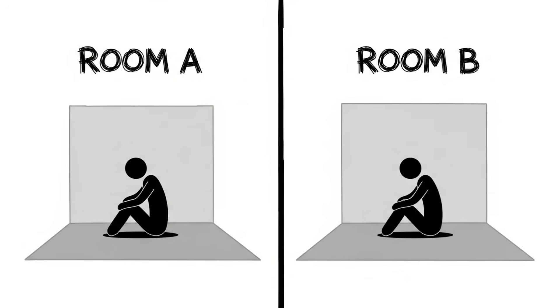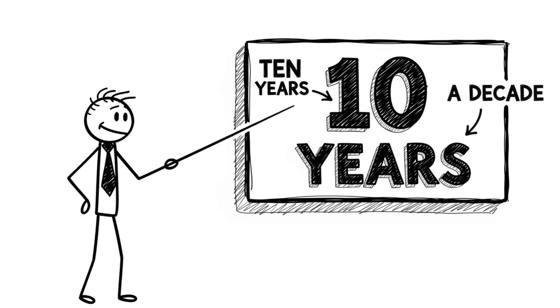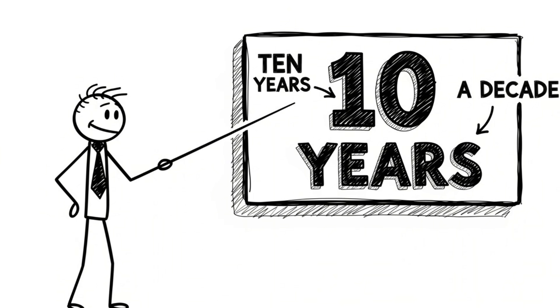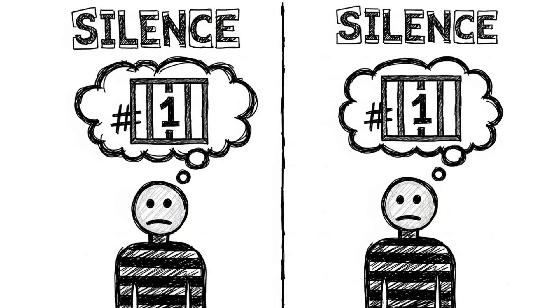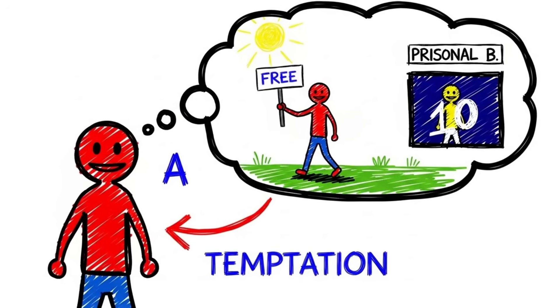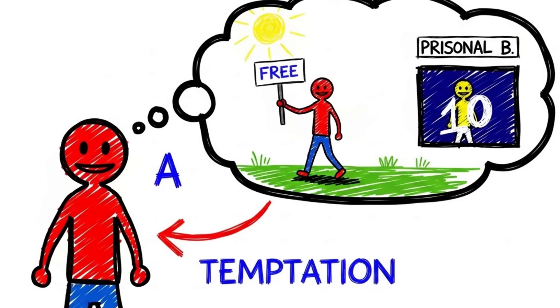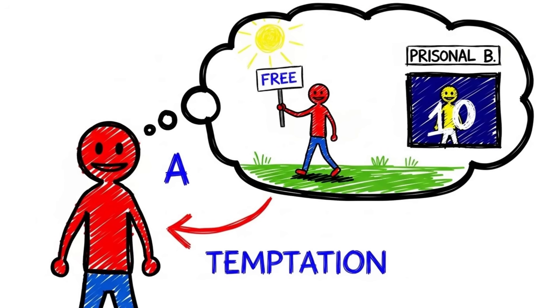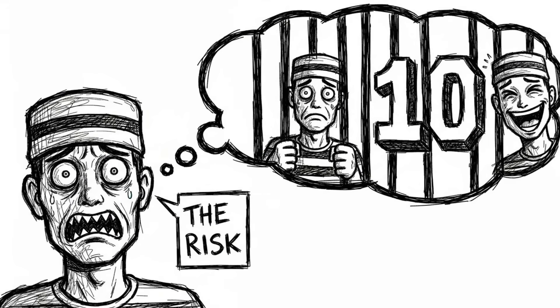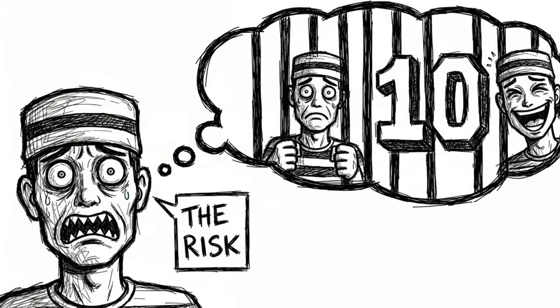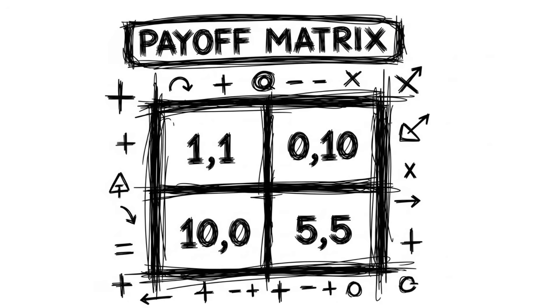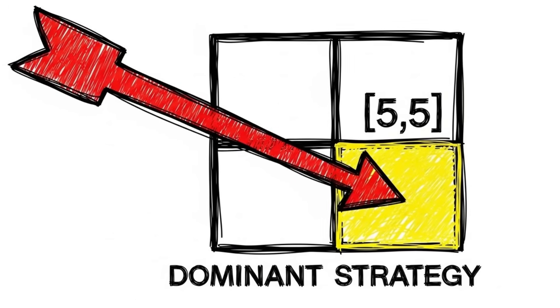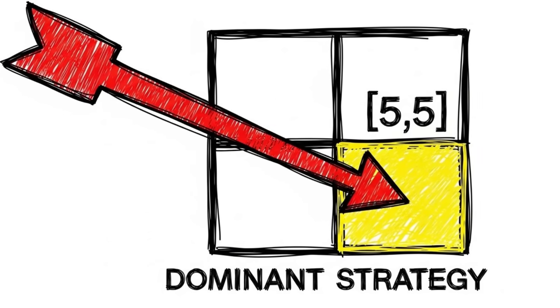They offer each prisoner a deal. If you betray your partner and testify against him, you go free and he gets 10 years. If you both stay silent, you both get just one year for the minor charge. But if you both betray each other, you both get five years. The math is cruel here. No matter what your partner does, your best individual move is always to betray him. If he stays silent, you betray him and go free. If he betrays you, you must betray him to avoid the 10-year sentence. Defection is the dominant strategy.